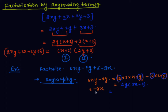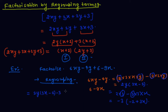Now for 6 minus 9x: 6 is 2·3 and 9x is 3·3·x, so 3 is common. Taking minus 3 as common gives minus 3(minus 2 plus 3x), which is minus 3(3x minus 2). So the expression becomes 2y(3x minus 2) minus 3(3x minus 2). Since (3x minus 2) is common in both terms, taking it out gives (3x minus 2)(2y minus 3).